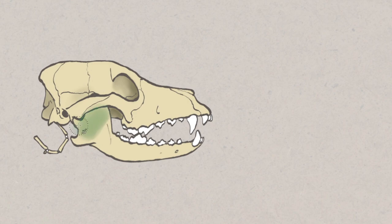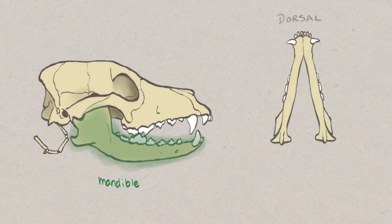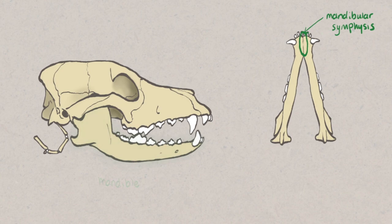The mandible or lower jaw sits ventrally and consists of two halves joined together rostrally at the mandibular symphysis. This can be seen most easily in this dorsal view. The mandible articulates with the skull at the temporomandibular joint, commonly known as the TMJ.